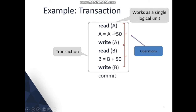Here is a basic example of how a transaction looks using read and write operations. These six statements form a whole unit working as a single logical unit called a transaction. Read A means it reads the value of A from the database. Then we perform subtraction: A = A − 50, deducting 50 from A's value, and the updated value is stored back in A. Then Write A stores that updated value back to the database.